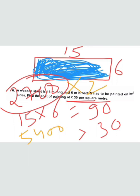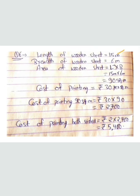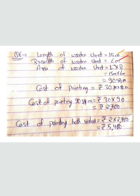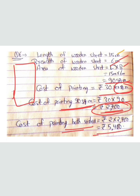Let's see how we write it: length of the wooden sheet is 15 meters, breadth is 6 meters. Area equals length × breadth = 15 × 6 = 90 square meters. Cost of painting at 30 rupees per square meter: 30 × 90 = 2700 rupees for one side. For both sides: 2700 × 2 = 5400 rupees. That is your final answer.